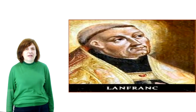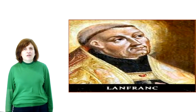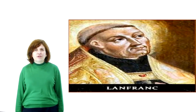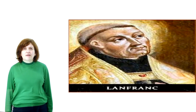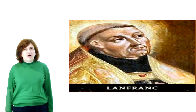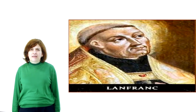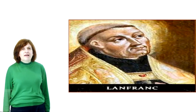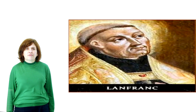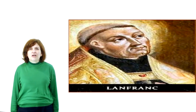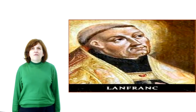William held council meetings nearly every day, wherever he happened to be. Three times a year, he held a ceremonial council for Christian feasts and wore his crown: in Winchester for Easter, in London for Whitsun, and in Gloucester for Christmas.